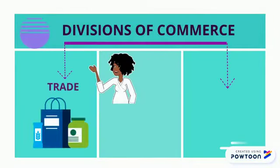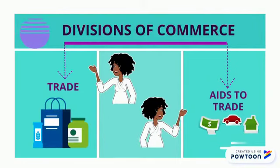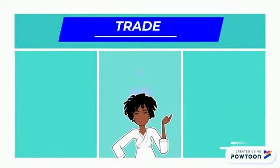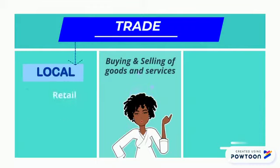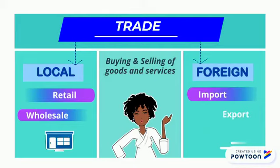Today we're going to look at the divisions of commerce: trade and aids to trade. Now what is trade? Trade is the buying and selling of goods or services. It can be local, with retail and wholesaling, or foreign, with importing and exporting between two countries.